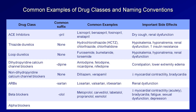Finally, alpha blockers end in -osin: terazosin, prazosin, and doxazosin. The major side effect of alpha blockers is orthostatic hypotension.